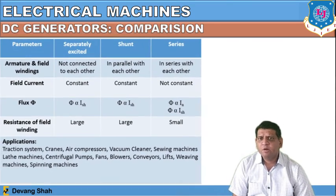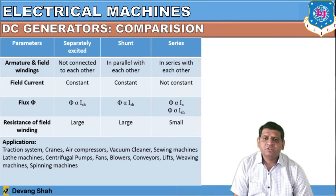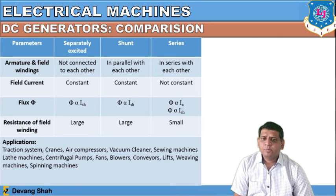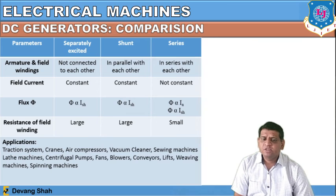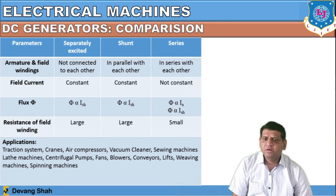Now let us compare the separately excited DC generator, shunt DC generator, and series DC generator. In the separately excited generator, armature and field windings are not connected with each other. In the shunt type they are in parallel, and in the series type they are in series. The field current is constant in both separately excited and shunt generators but not constant in series. The resistance of the field winding is very large for separately excited and shunt types but very small in the series type.